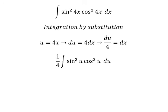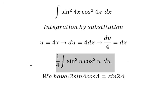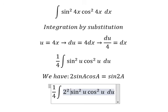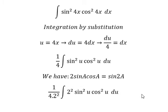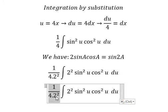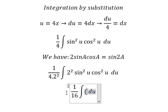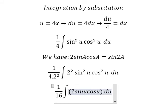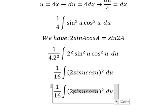Now we have the formula: 2sinAcosA = sin2A. So we need to have the number 2, but this is to the power of 2, so we need 2² in here. That means we divide by 2², which gives us 1/16 ∫2² sin²u cos²u du, which becomes 1/16 ∫(2sinucosu)² du.